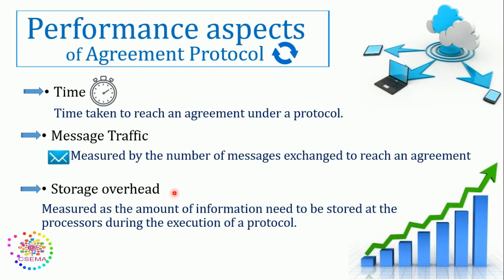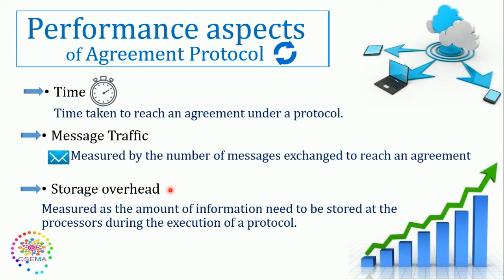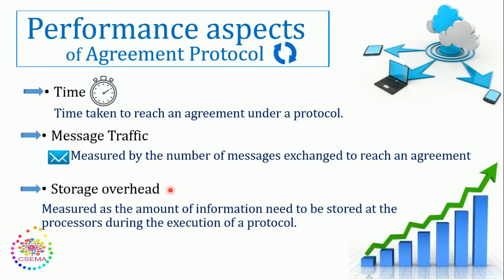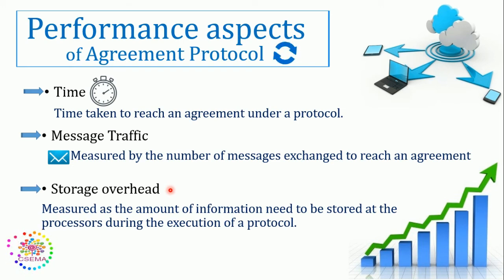Here we have three performance metrics used to measure whether our agreement protocol is working as expected. The first is time — the interval or time taken to reach an agreement under a protocol. The second is message traffic — measured by the number of messages exchanged to reach a particular agreement, how many messages are exchanged from one process to another. The third is storage overhead — measured as the amount of information that needs to be stored at the processor during the execution of a protocol.